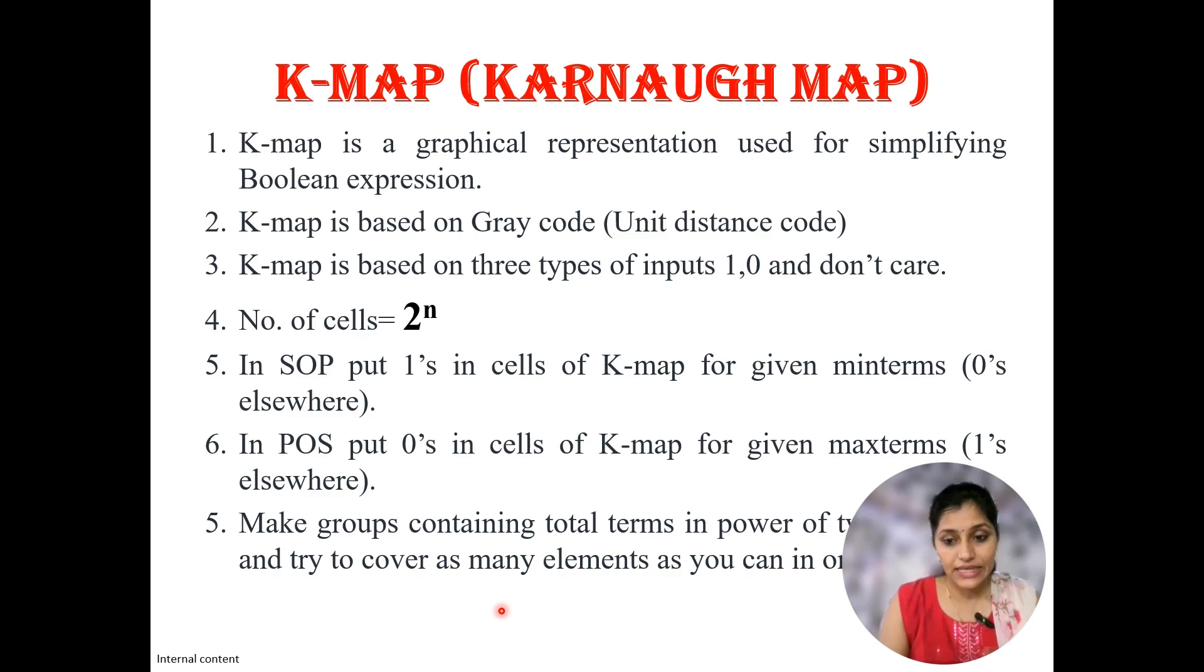After inserting 1s and 0s in K-map cells, next is making groups of adjacent ones or overlapping ones or adjacent 0s in case of POS and overlapping 0s. When we make groups, we make groups of 2 they are called as pair, or 4 they are called as quad, or 8 octet. Let's see the K-map reduction technique using one example.